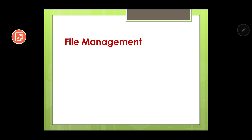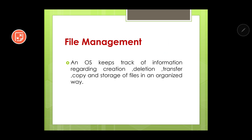Next is file management. In a computer there are various files. The operating system manages files — like date of creation, date of modification, and all related information. An operating system keeps track of information regarding creation, deletion, transfer, copy, and storage of files in an organized way, so that you can store files in an organized manner.